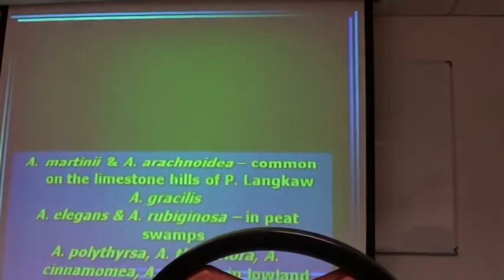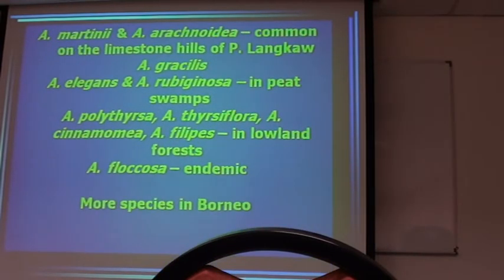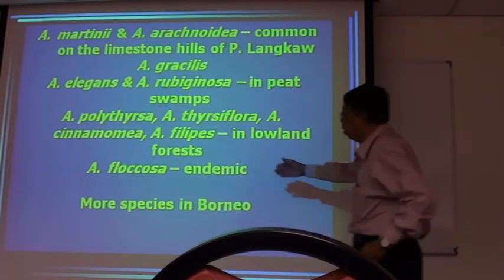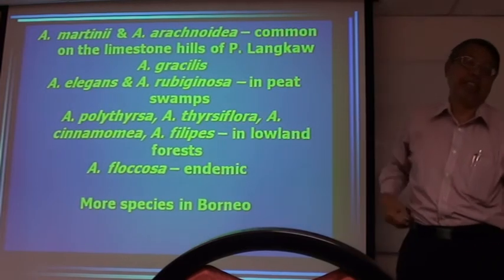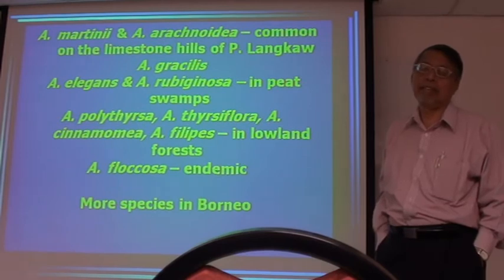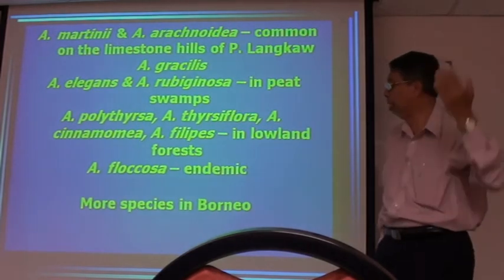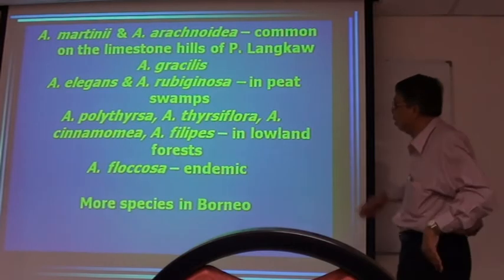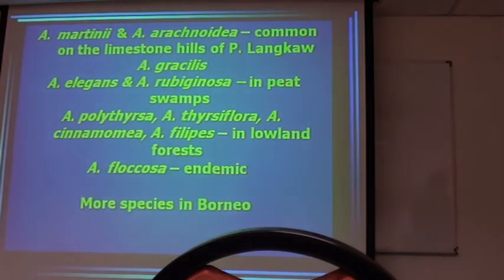Okay, so these are the species that are found in our peninsula. We got one endemic, flucosa, which is only restricted to Negeri Sembilan to Jemput Putan Simpan Flower, and nowhere else. The rest everywhere, but many species are in Borneo, the center of diversity of species there.